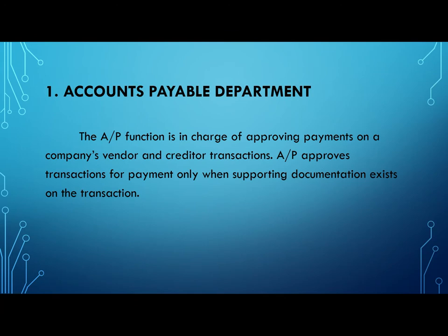The Accounts Payable Department is the first department in the cash disbursement system. The AP function is in charge of approving payments on a company's vendor and creditor transactions. AP approves transactions for payment only when supporting documentation exists, and it is preferable that AP does not record the actual payment to the vendor or creditor, to prevent payment of fraudulent or invalid transactions.